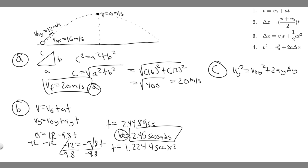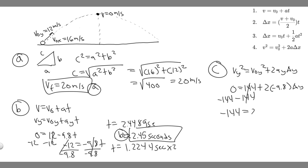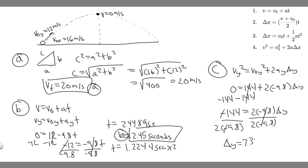At the highest point, V-sub-Y is zero, so: 0 equals 12 squared plus 2 times (−9.8) times delta-Y, which gives 0 equals 144 plus 2(−9.8)(delta-Y). Subtracting 144 from both sides: −144 equals 2(−9.8)(delta-Y). Dividing by 2(−9.8) — the negatives cancel — so delta-Y equals 144 divided by (2 times 9.8), which equals approximately 7.3469.